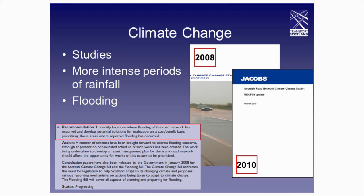Over the last few years we carried out a few studies — one by Jacobs in 2010 and another one in 2008 — focusing on more intense periods of rainfall. One of the key things we're looking at is identifying the sections of our asset that have flooding issues, and that's where we're focusing our efforts, similar to the approach the Highways Agency are considering.